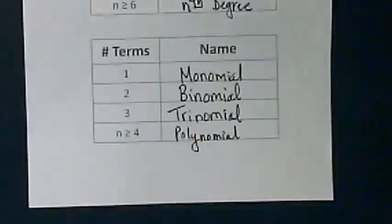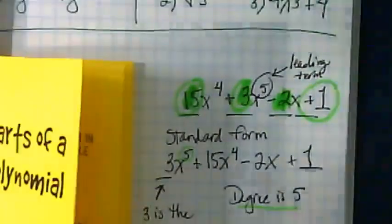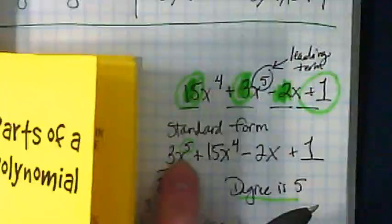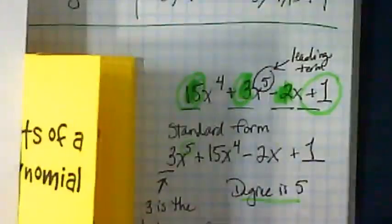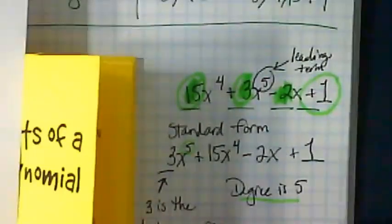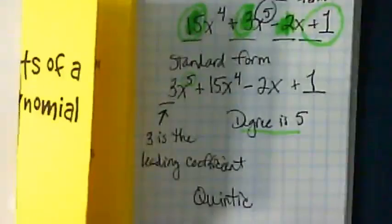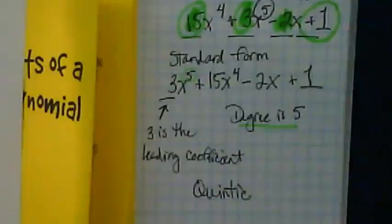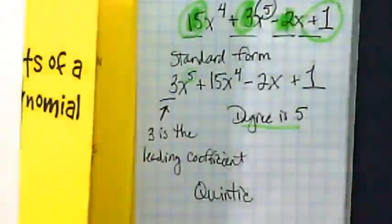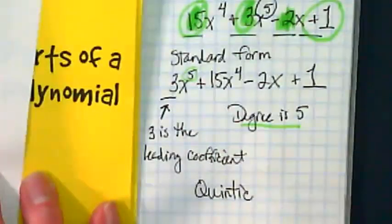So let's go back and look in our notebook at that one that we were writing here. What is its highest degree? Five. So its first name is quintic. And then it has how many terms? So what's its last name?